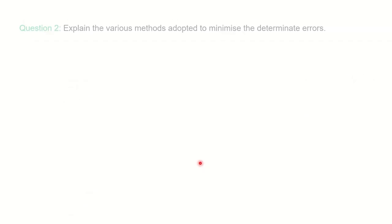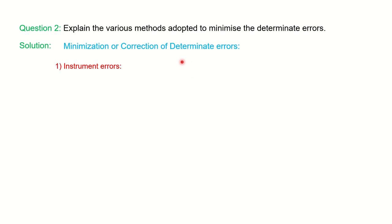Next question is: explain the various methods adopted to minimize a determinate error. We will see minimization of determinate error or correction of the error. First is instrument error. This determinate error can occur because of the instrument error. For that we have studied already that the calibration of the instrument is required.